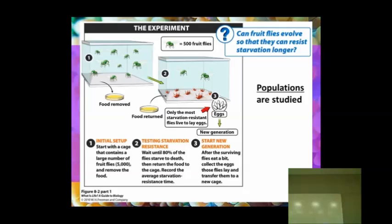They waited until there was very few fruit flies left, the ones that could survive the longest. Then they put the food back in the cage, and these guys make their eggs, and that makes the next generation. At the start of a new generation, after the surviving flies eat for a bit, they collect the eggs that are laid by those fruit flies and put them in a new cage. Then they start testing it again. They wait until 80% of the fruit flies starve, and then they return the food to the cage and record the average resistance time.